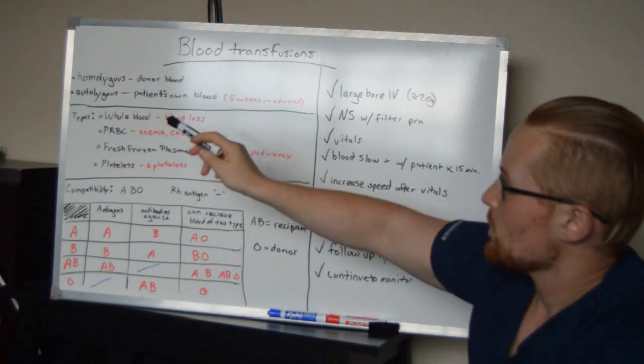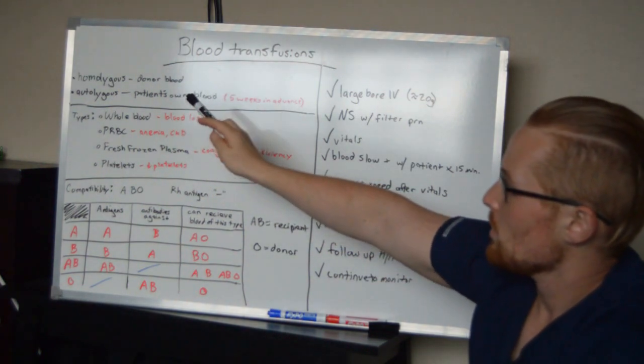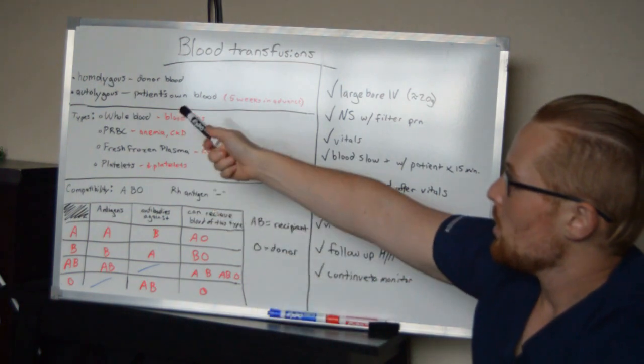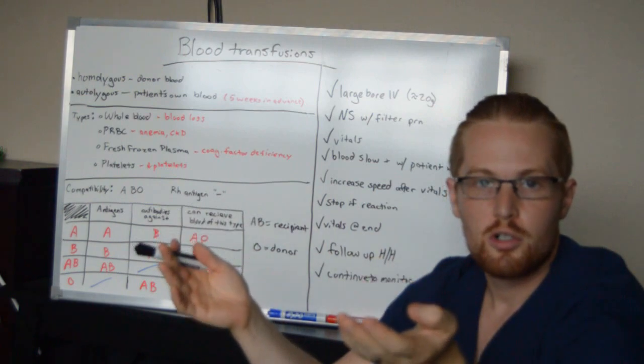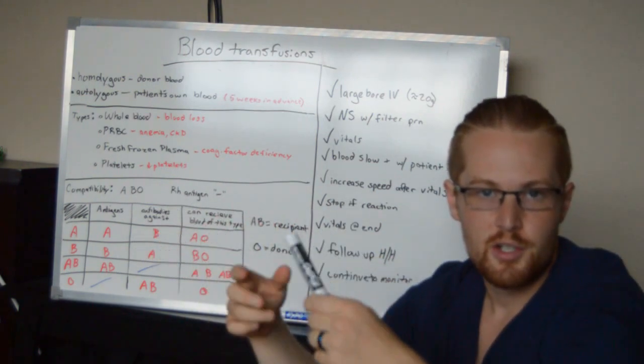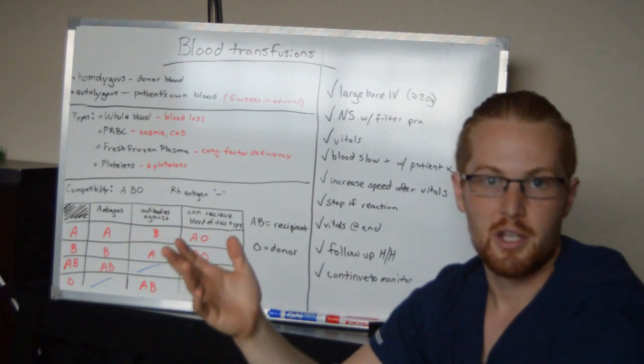So there are two types of blood transfusions I'm going to talk about. There's homologous and autologous. Homologous is the typical blood transfusion, which is donors are giving blood to different organizations and then the blood makes its way to the hospital and goes to a random patient.